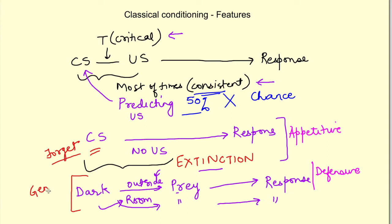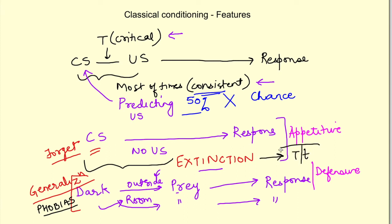In generalization, a stimulus similar to the conditioned stimulus elicits a similar response. This actually happens when phobias develop — a stimulus which is not actually dangerous starts eliciting a fear response. Interestingly, phobias are also treated using the concept of conditioning, specifically extinction. Patients are presented with the stimulus slowly and gradually, and this is not followed by the actual unconditioned stimulus. When this is repeated over time, it leads to extinction of the learned fear response.